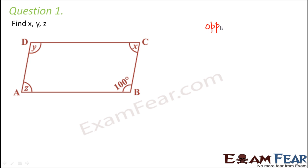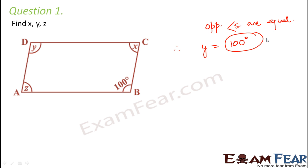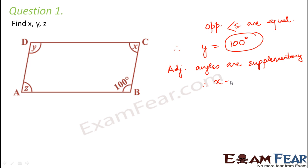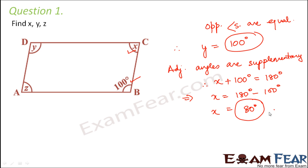The first property we know is that opposite angles are equal. Since opposite angles are equal, we can easily find that y is equal to 100 degrees. The second property is that adjacent angles are supplementary — their sum equals 180 degrees. So x plus 100 degrees equals 180 degrees, therefore x equals 180 minus 100, which is 80 degrees.